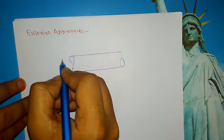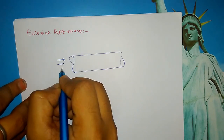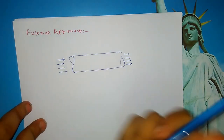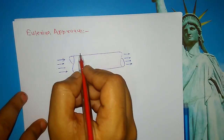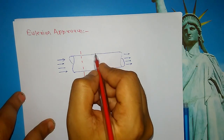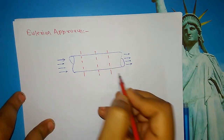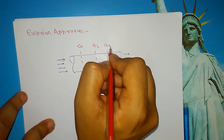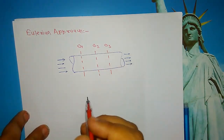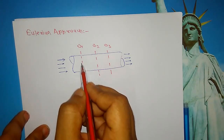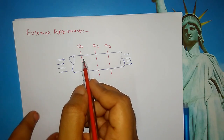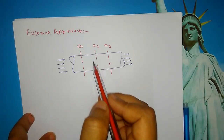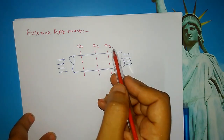Suppose water is flowing along a pipe — this is the inlet and this is the outlet. In the Eulerian approach, what we are doing is fixing some locations and putting some observers there. Suppose we are fixing three locations and putting three observers: o1, o2, and o3. Observer o1 will note down the entire velocity and acceleration at point o1, and so on at o2 and o3.